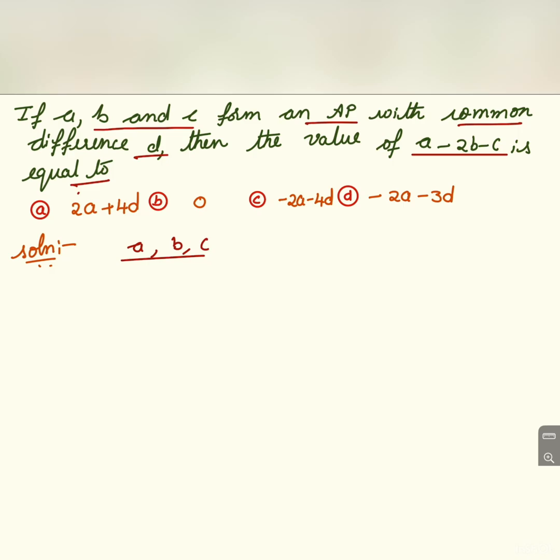You know A, B, C are in AP. A is the first term, B is the second term, hence it is A plus D, and C is the third term A plus 2D.